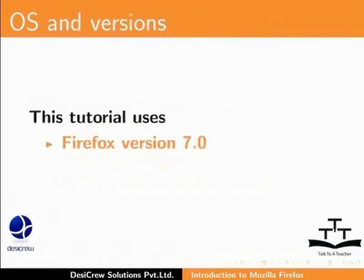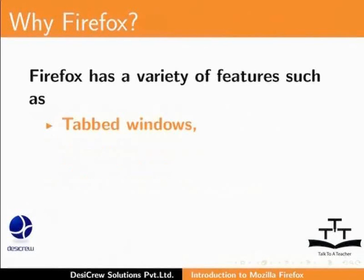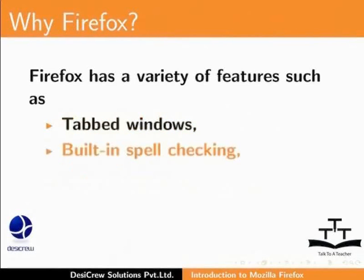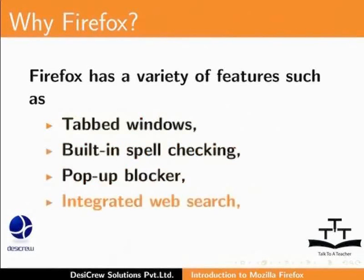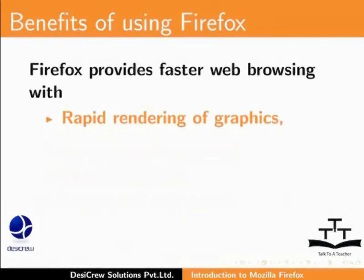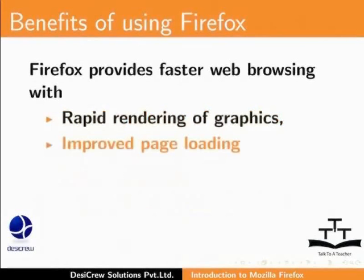In this tutorial, we will use Firefox version 7.0 for Ubuntu 10.04. Firefox makes browsing better by bringing together speed, privacy, and latest technologies. It has a variety of features such as tabbed windows, built-in spell checking, pop-up blocker, integrated web search, and phishing protection. Firefox also provides faster web browsing with rapid rendering of graphics and improved page loading.